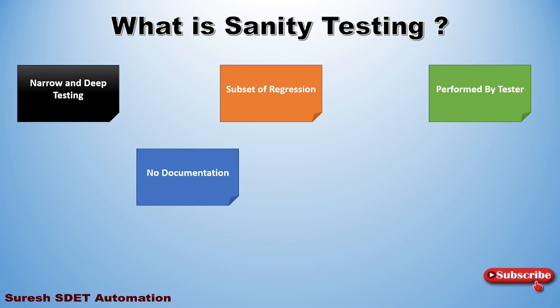Unlike smoke testing or regression testing, sanity testing has no documentation. It is an unscripted testing. For regression and smoke testing we plan ahead, but sanity testing is unplanned — we do it at any point of time to verify that a particular bug fix is working or a particular functionality is working.